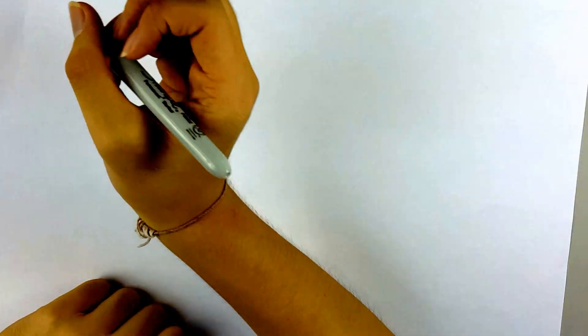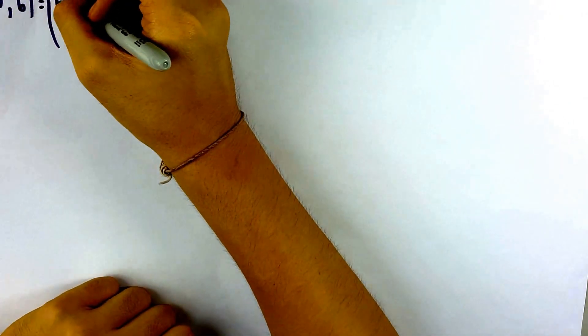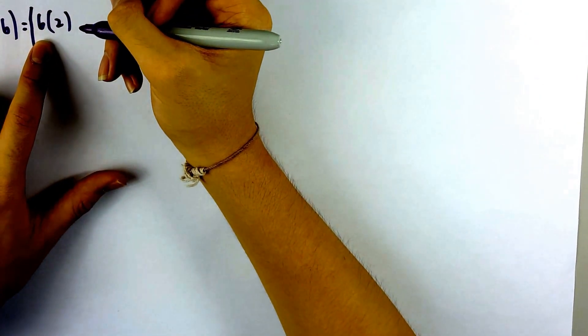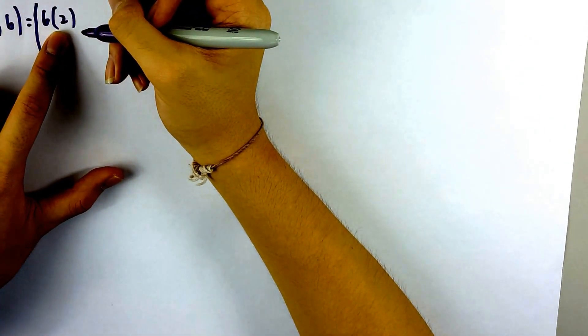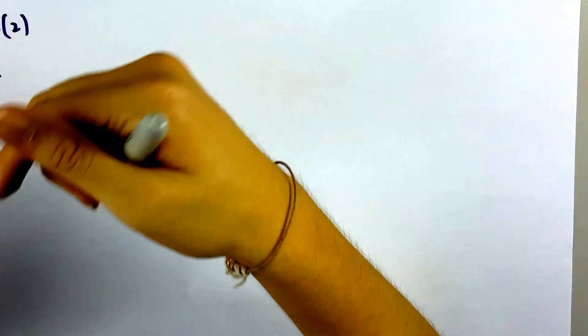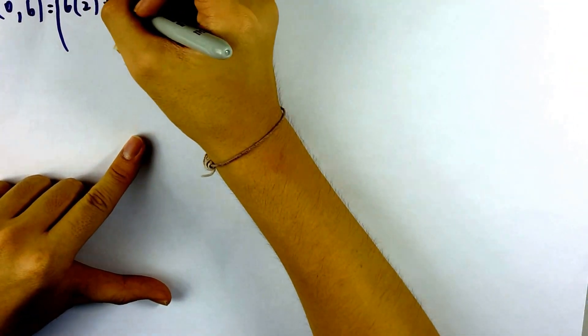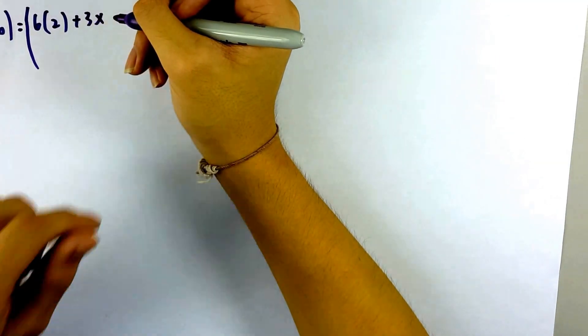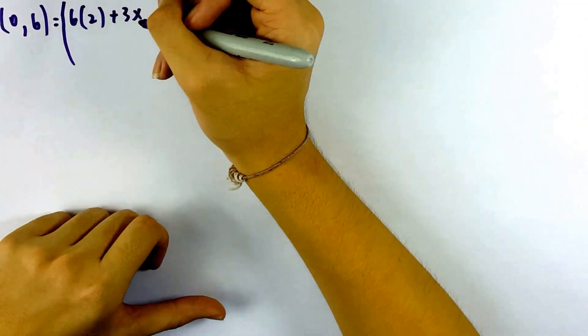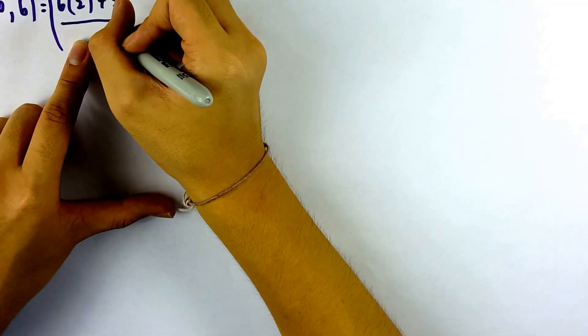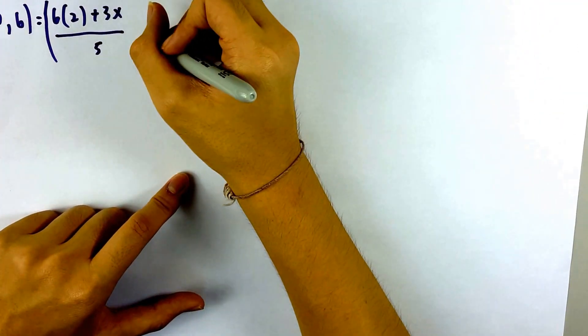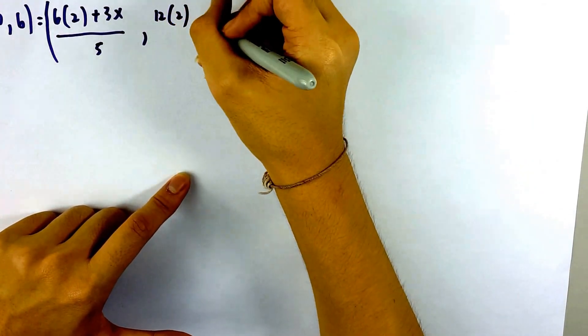You want to find the coordinates of A, so B is the midpoint and the ratio 2 to 3 is given. You substitute: 6 is the x-coordinate of point C, and 2 is the ratio, so you cross multiply. Plus 3 times X, where X is the x-coordinate of A — an unknown — and divide by the total ratio 2 plus 3, which is 5.